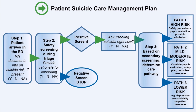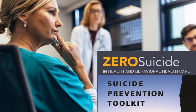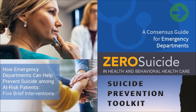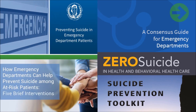This slide shows an example of one clinic's patient suicide care management plan to help determine appropriate interventions based on patient risk level following a positive screening. There are many resources linked at the end of this video that can provide guidance on what to do when a patient screens positive.